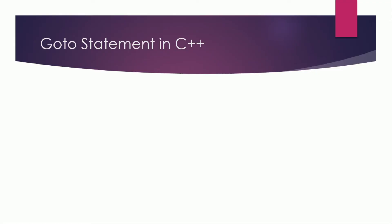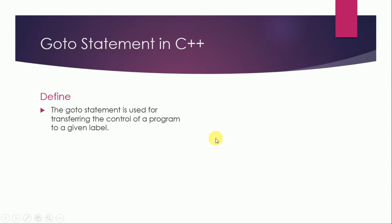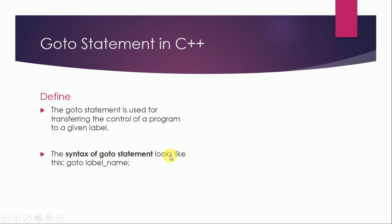Hum isko example se bhi understand karte hain. Definition: the goto statement is used for transferring the control of a program to a given label - jo given label hoga, wahan par control ko transfer kar dega. Iska syntax is tarah ka hai: 'goto' aur uske baad label ka name likhna hai.